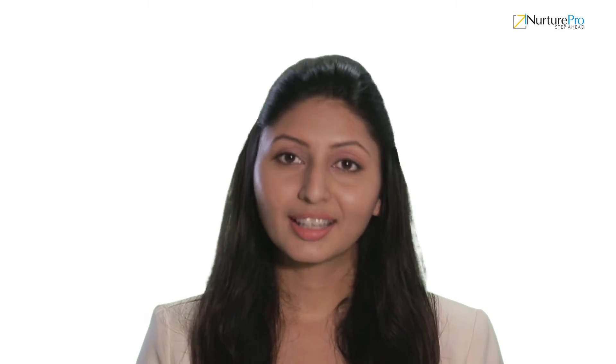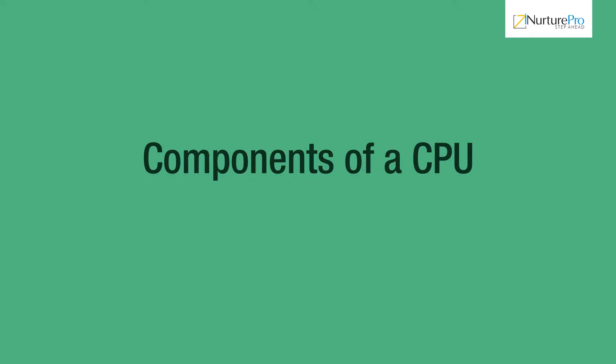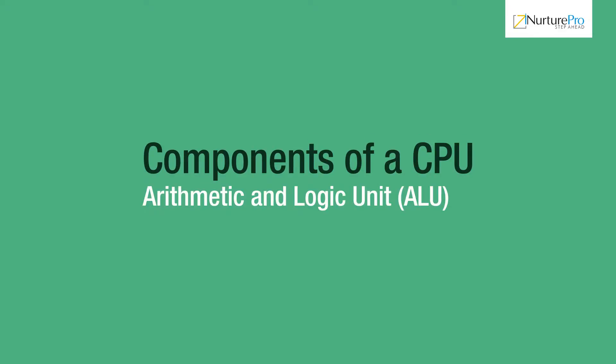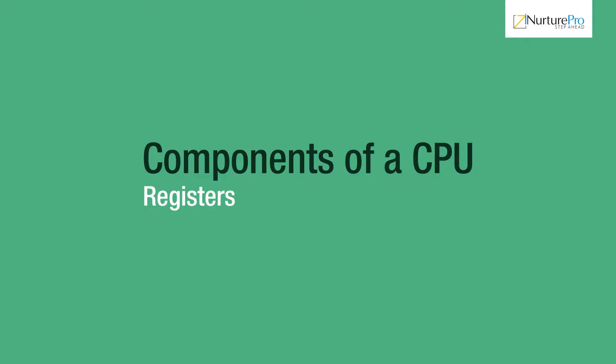I hope you understand what CPU is. Now let us move on to the components of CPU. CPU has three main components, namely control unit, arithmetic and logic unit, and registers. Along with these, it also has internal memory and bus. Let us now look into each of these components.